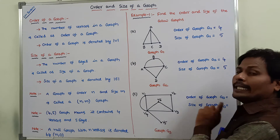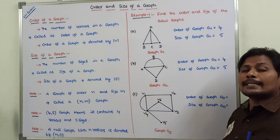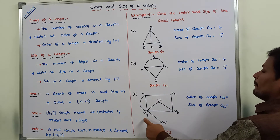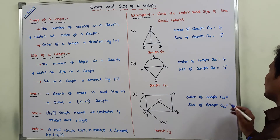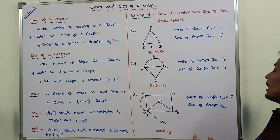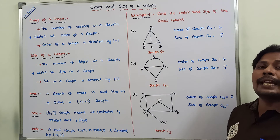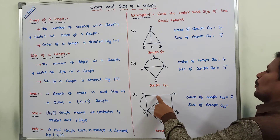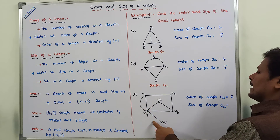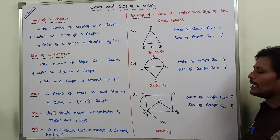Consider graph G3. Order of graph G3 means number of vertices present in graph G3: b1, b2, b3, b4, b5, b6. So order of graph G3 is 6. Next, size of graph G3 means number of edges present in graph G3: 1, 2, 3, 4, 5, 6, 7, 8. So size of graph G3 is 8.